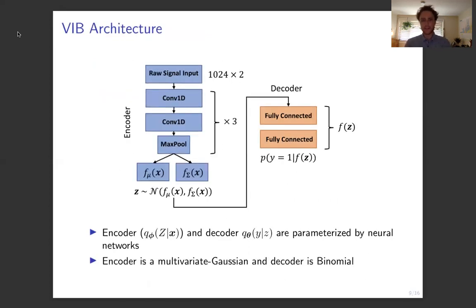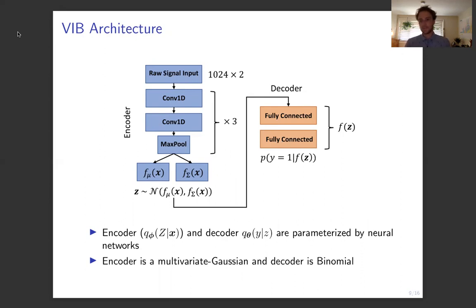To be more specific, we parameterize the encoder as a multivariate Gaussian. We take the raw signal and pipe it through a convolutional neural network to learn the mean and covariance matrix of this multivariate Gaussian. We then sample from this distribution to obtain latent representations, which are piped into our decoder — a standard binomial likelihood model. Importantly, our model is inherently stochastic due to this sampling step during both training and testing.